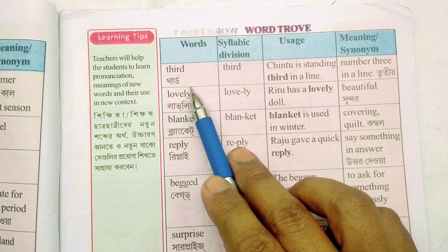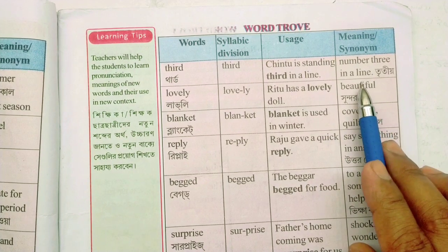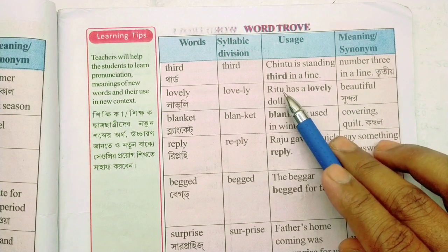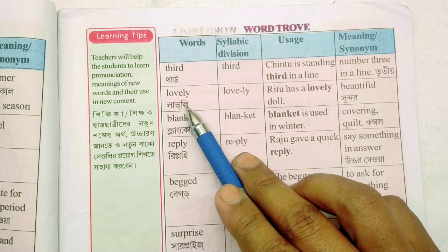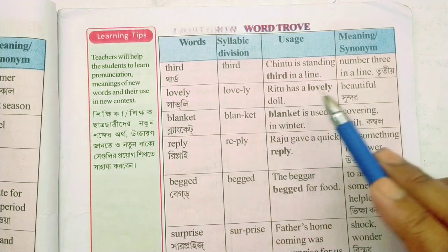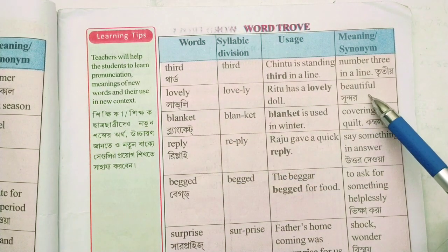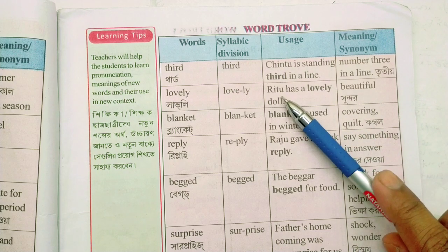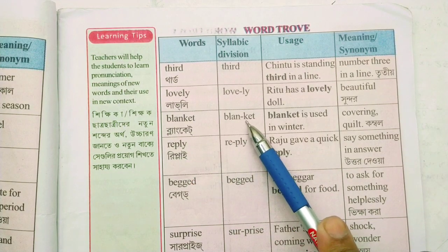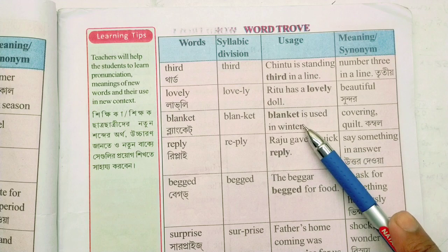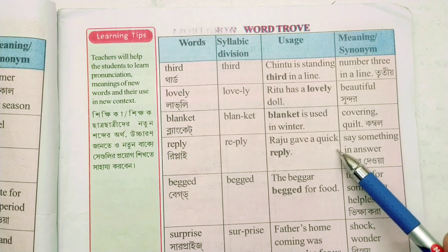Third — number three in a line. A line is three number, which is third. Chintu is standing third in a line. Lovely — lovely means beautiful. Rita has a lovely doll. Blanket — blanket is used in winter.